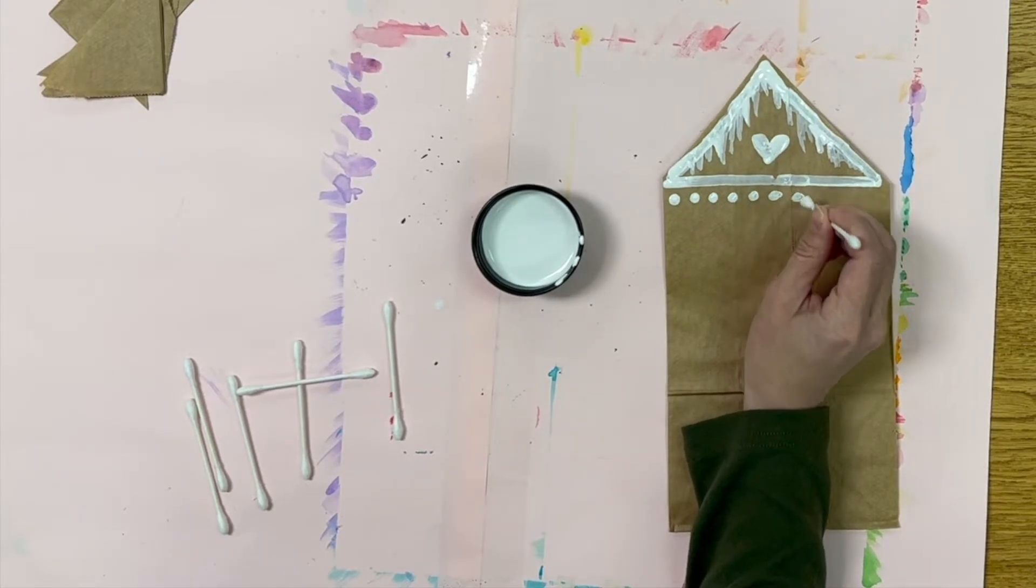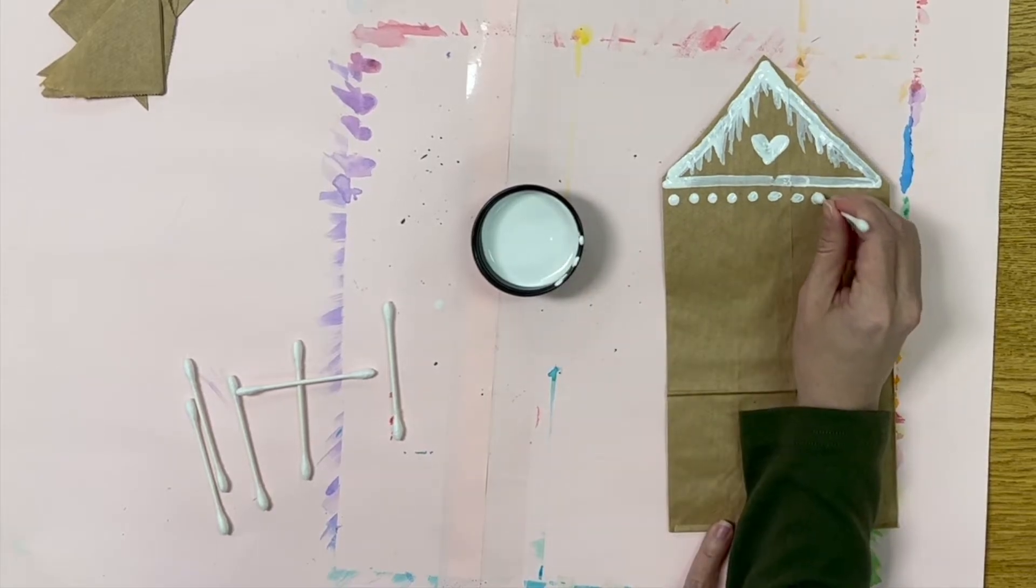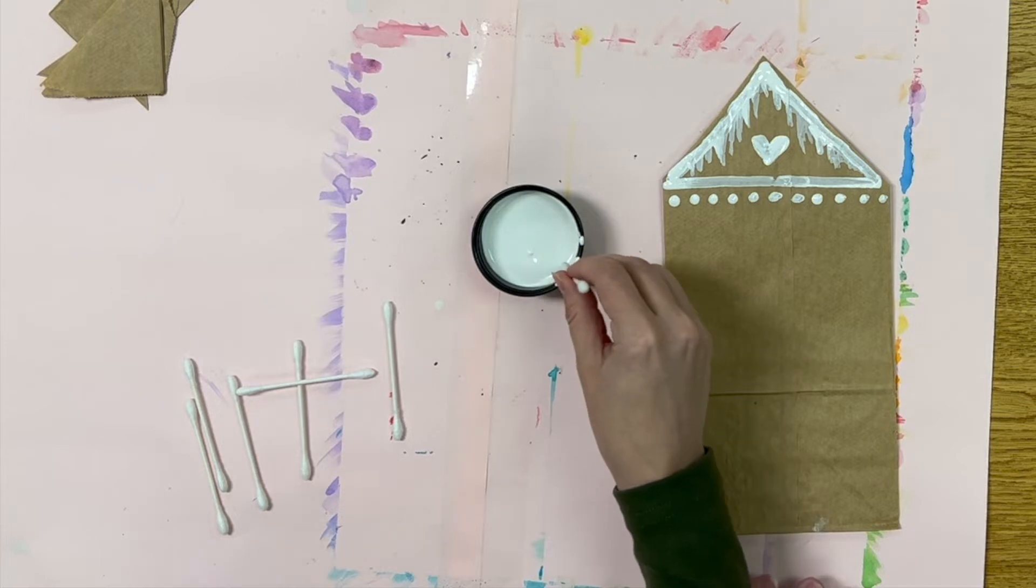Another fun thing to do on a gingerbread house is to make a row of dots like these ones along the top toward the roof. The possibilities are endless.